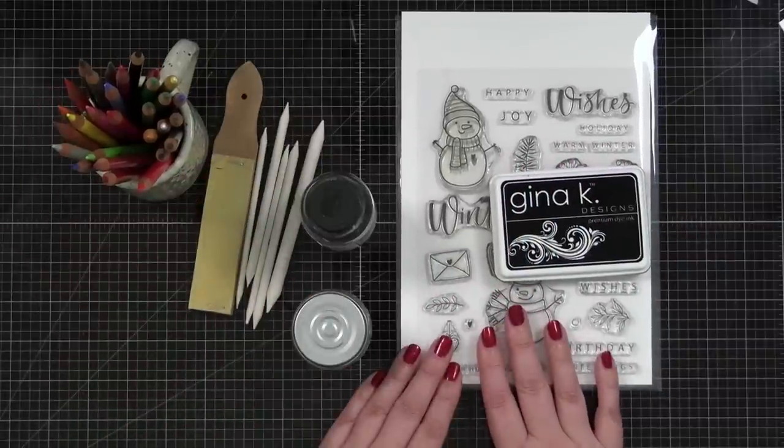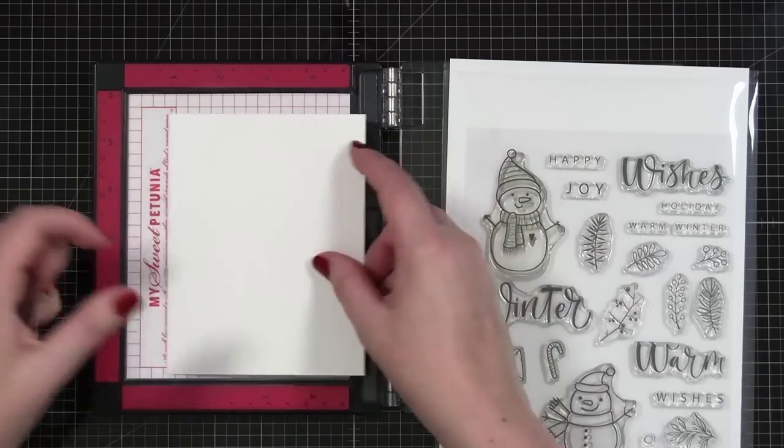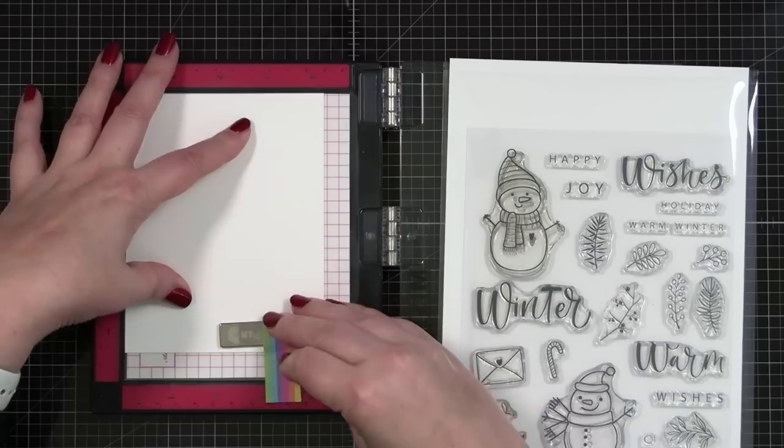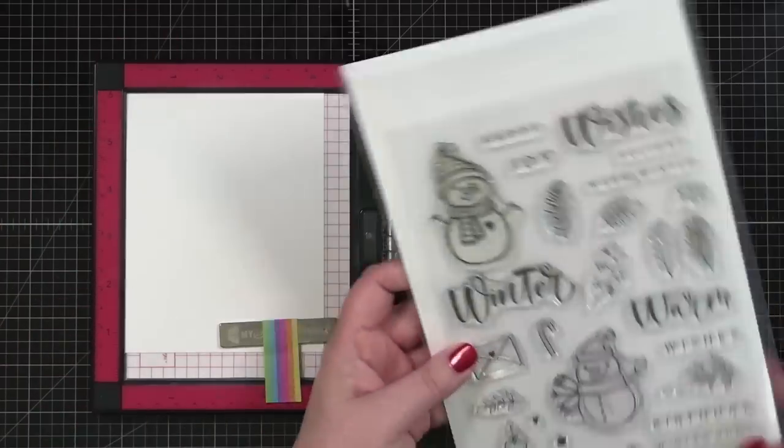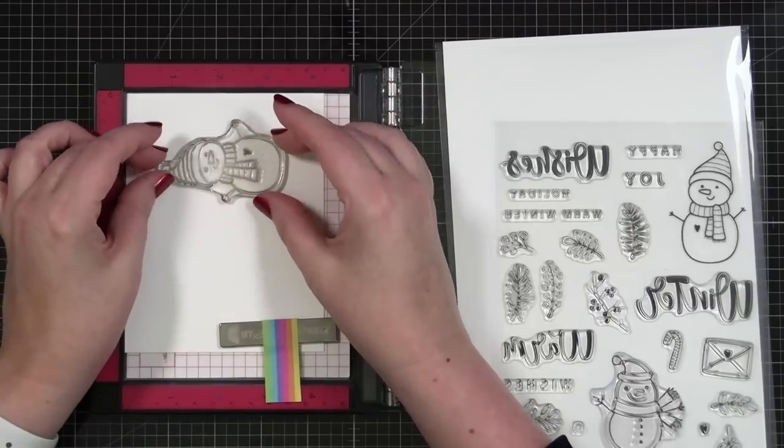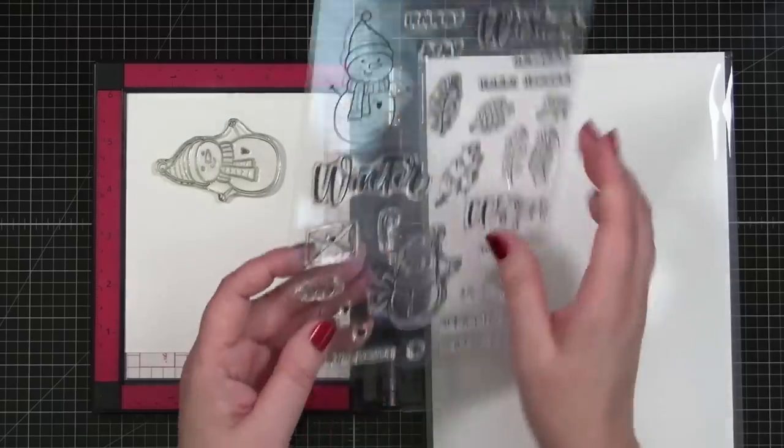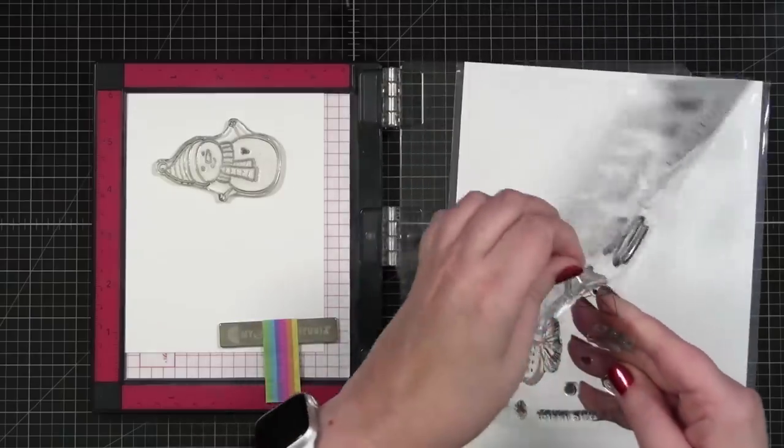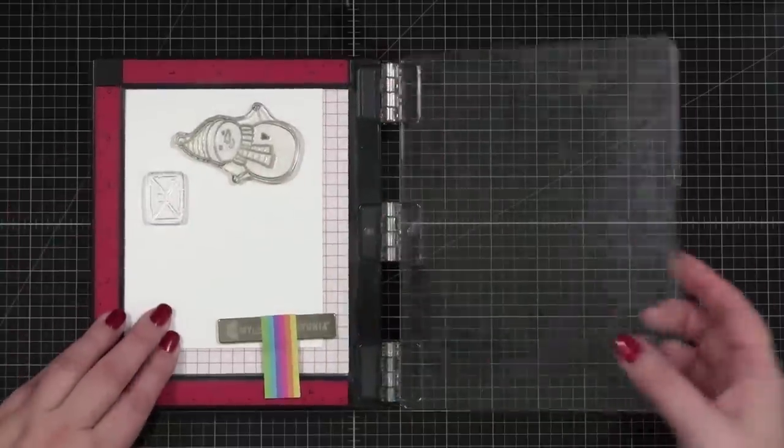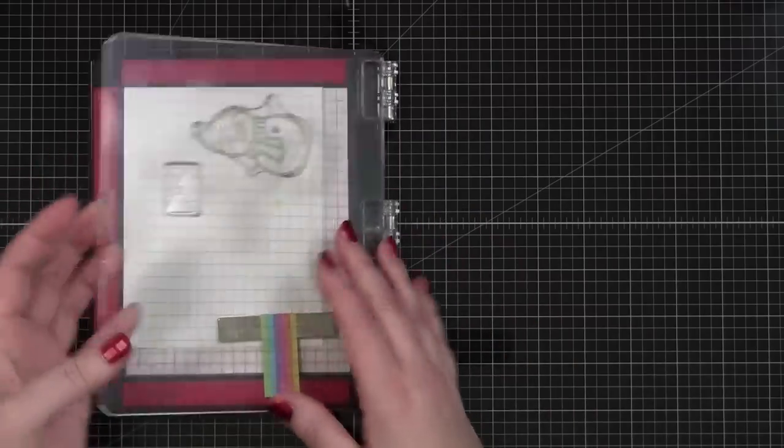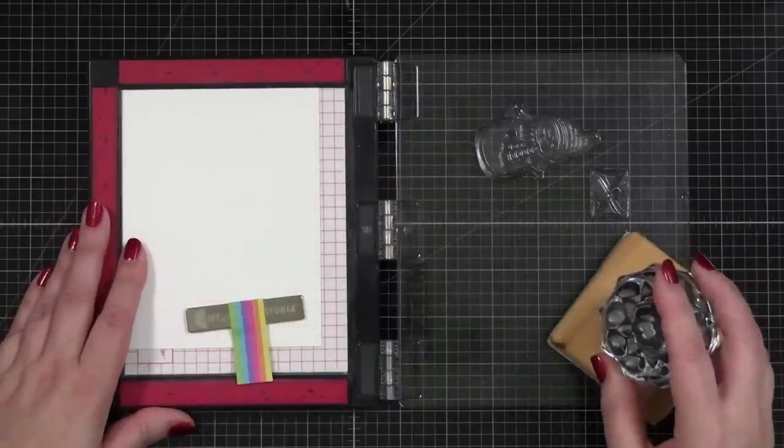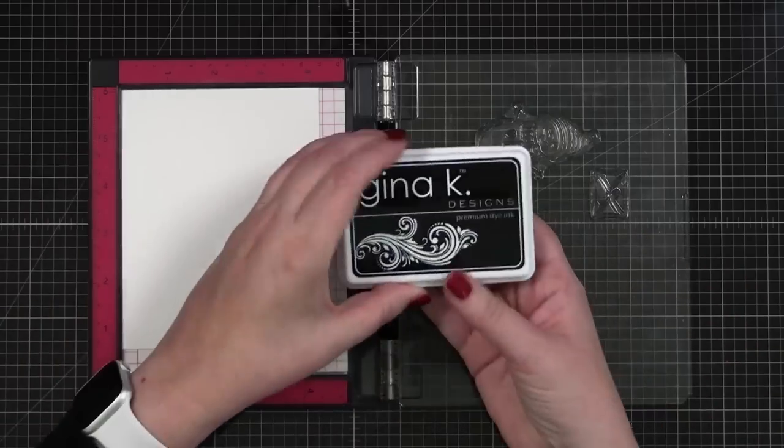So let me get set up for stamping. I've got some of Gina K's heavy base weight white cardstock. I'm going to make sure my mat's down there, and this is what I'm going to stamp my snowmen on. Honestly, I just think I want to do one today. I'm going to stamp one here. It would be cute to also stamp one of these little envelopes.